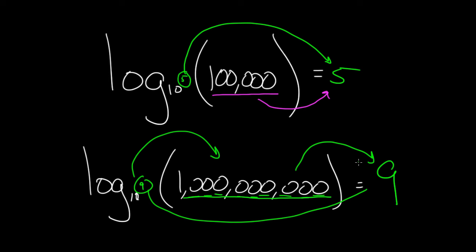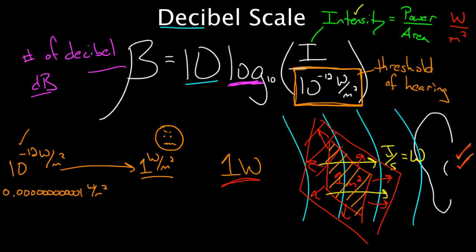So logarithms take enormous scales, turn them into nice scales. That's why we like this formula, which is our decibel scale because it takes enormous intensities and small intensities, turns them into nice intensities.